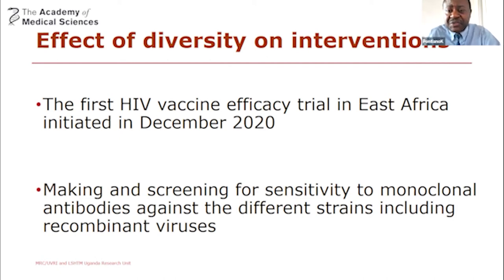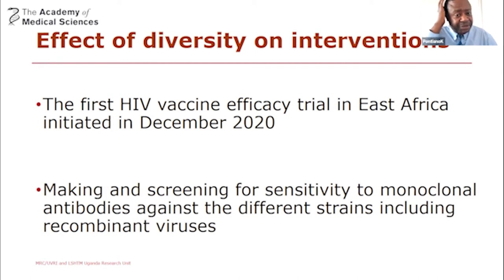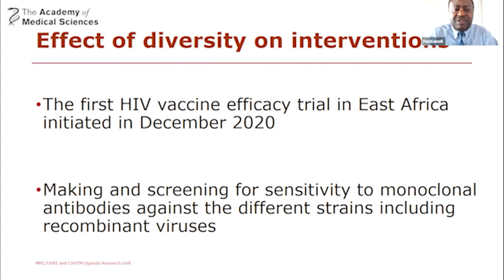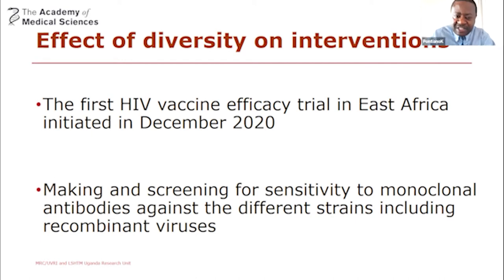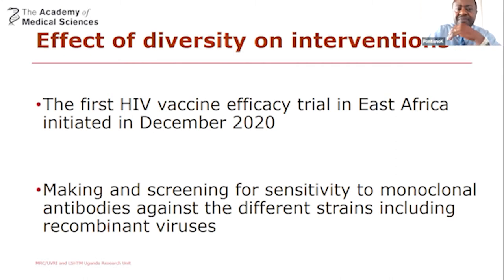The other work we are doing is generating monoclonal antibodies. Monoclonal antibodies are becoming quite important in HIV studies and prevention. Some of you may have heard of the trial in South Africa where it was indicated that though antibodies could prevent infection, there is a breakthrough of infection, again because of diversity. Our work now is to develop monoclonal antibodies and also to test them against different HIV strains, including recombinant viruses, to see how HIV diversity can affect monoclonal antibodies.